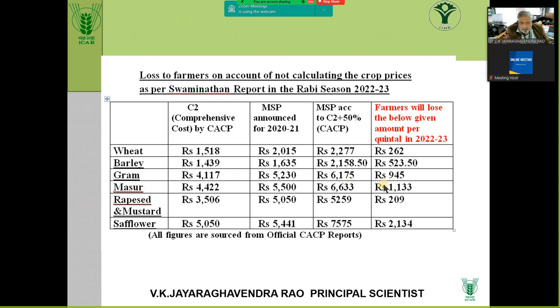In the case of Masur, with the MSP offered, he makes 1,133 rupees profit. With rapeseed and mustard, despite record production and export potential, the margin is only 209 rupees. Safflower is still good, although it is a tricky rabi crop with more thorns — breeders are trying to come out with thornless safflower.